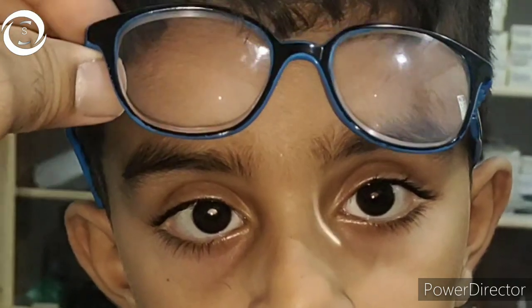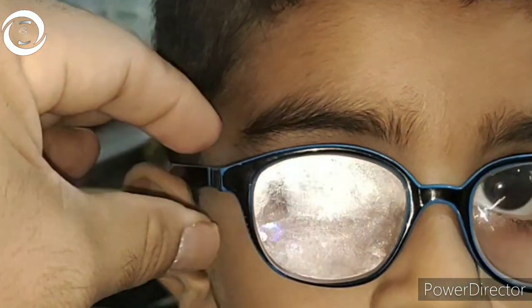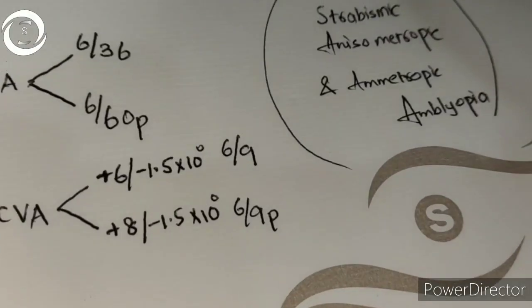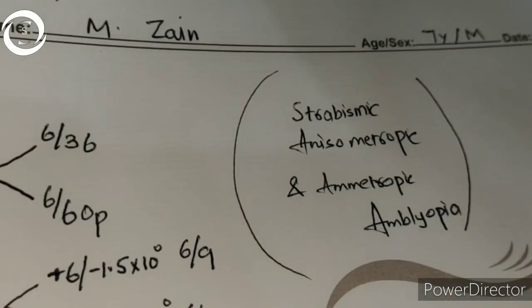This is an interesting case in which we have found three components of amblyopia: strabismic, anisometropic, and ametropic. The unaided vision was 6/60 in the left eye and 6/36 in the right eye, and the best corrected vision was 6/9 in the right eye and 6/9 partial in the left eye.